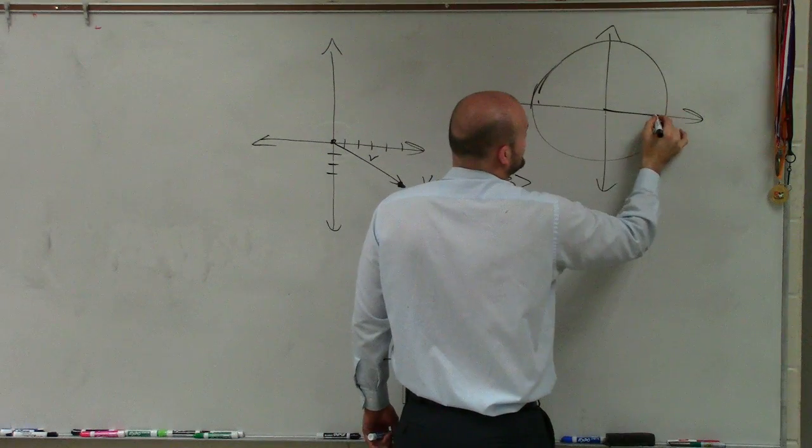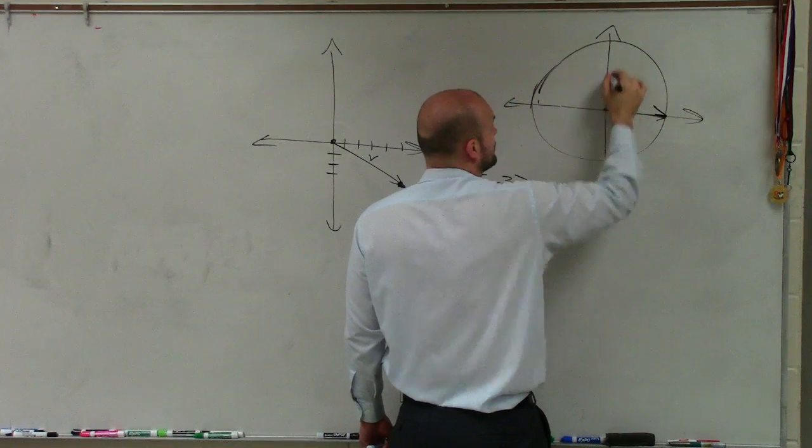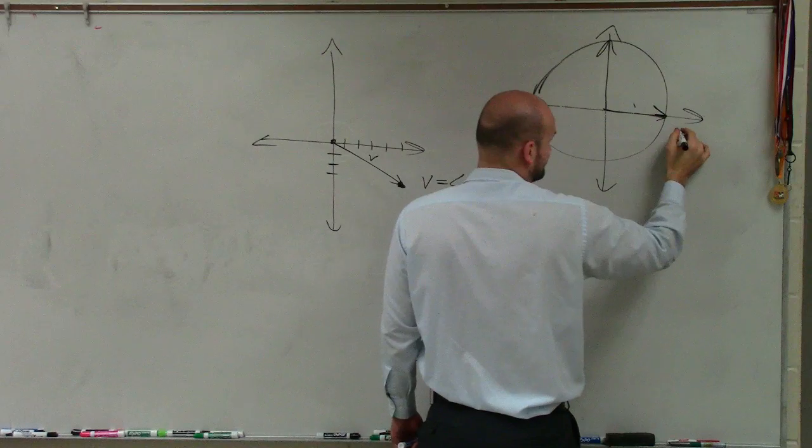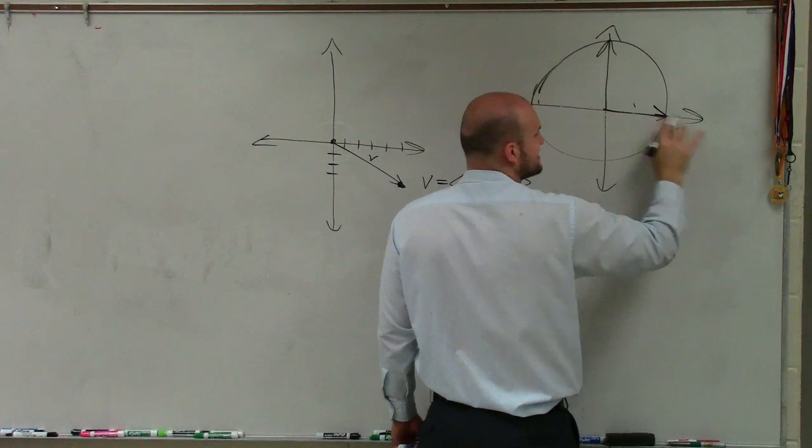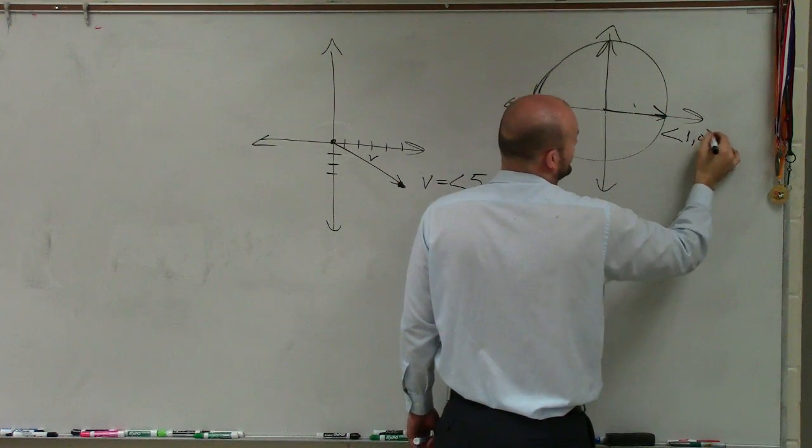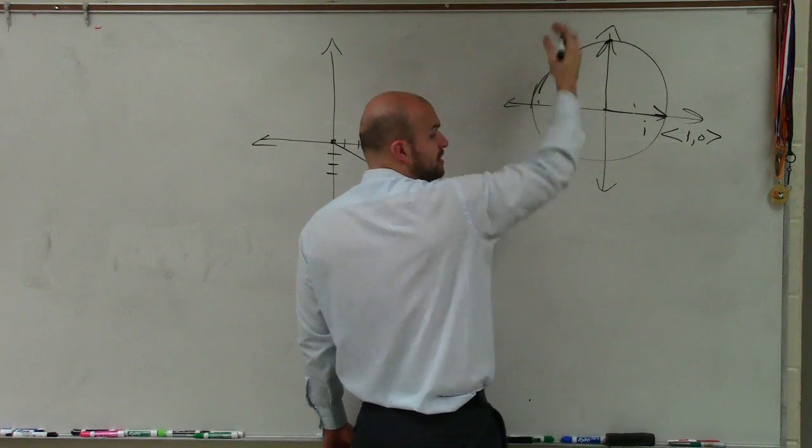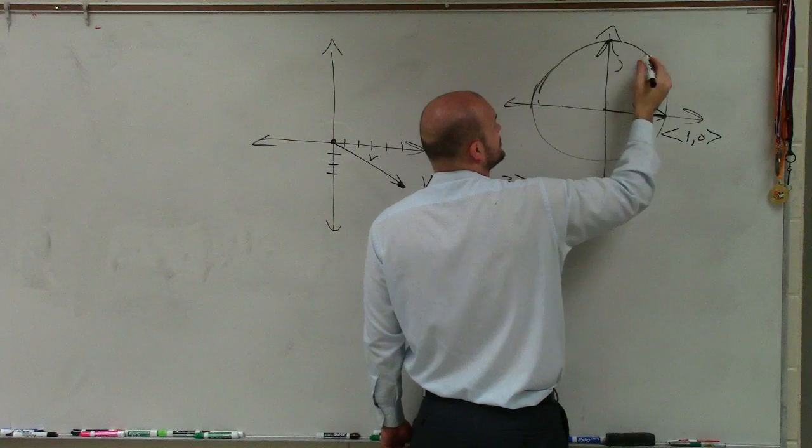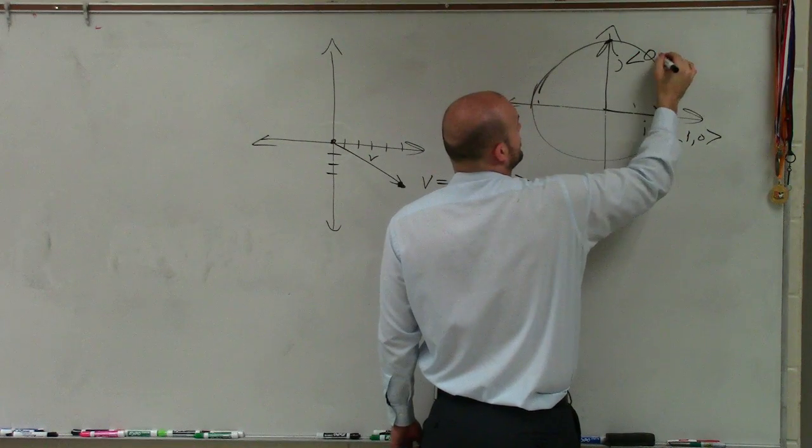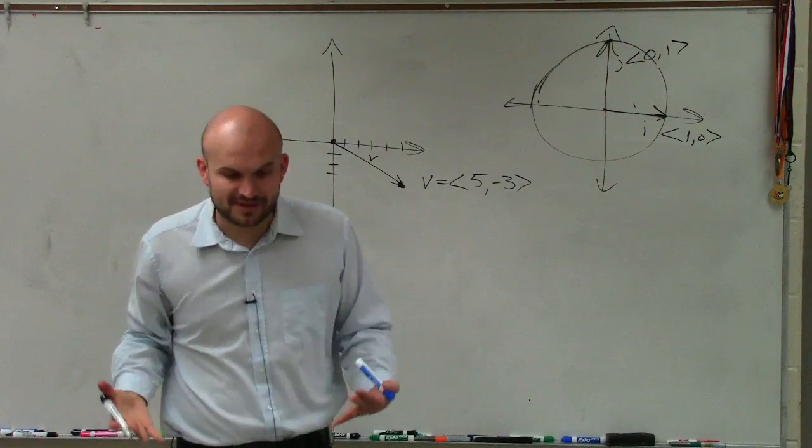We know that our unit vectors have a magnitude of 1. And we call the one that's on the x-axis, which would be 1, 0, we call that i. And then up here, that's going to be on the y-axis, we call that j, which is 0, 1. So there's your two unit vectors.